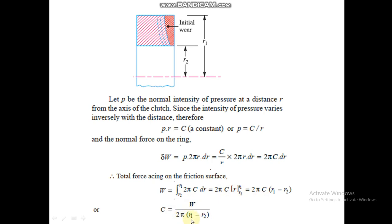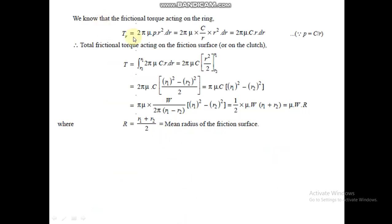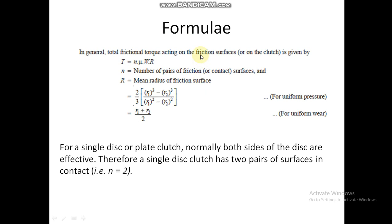After solving the integral, c equals W divided by 2π(r1 − r2). For frictional torque, we derived in Part 1 that torque involves 2πμp·r²·dr. Substituting p = c/r gives 2πμc·r dr. Integrating the total frictional torque gives μW·r, where r is the mean radius (r1 + r2)/2.